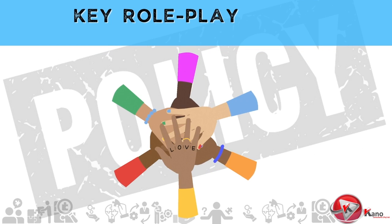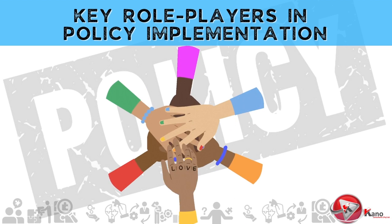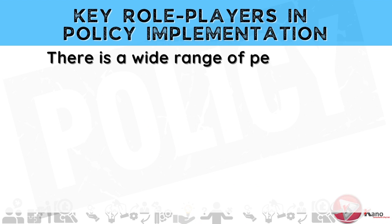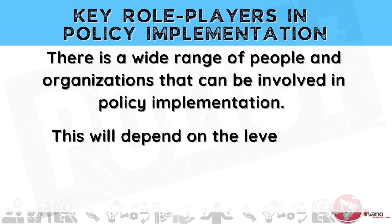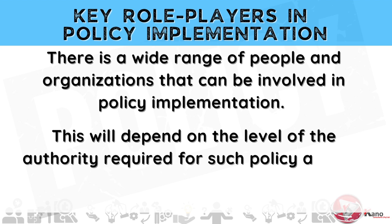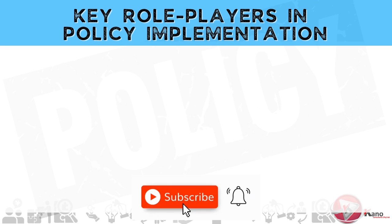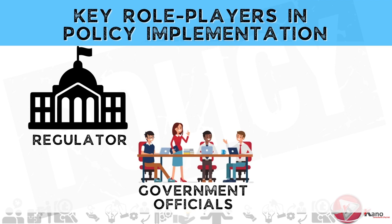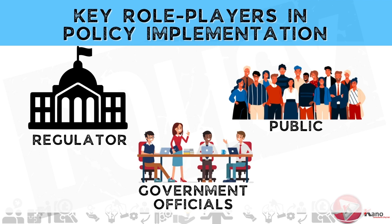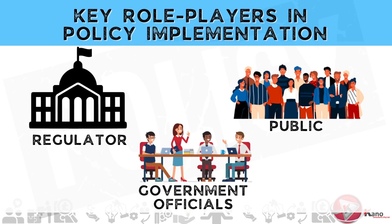In this next section, we discuss the various key role players in the process of policy implementation. There is a wide range of people and organizations that can be involved in policy implementation. This will depend on the level of authority required for such policy and the type of policy to be implemented. The various key role players in the process of public policy implementation may include the regulator, government officials, and most importantly, the general public. Each of these role players plays a different but important role in the process of policy implementation.